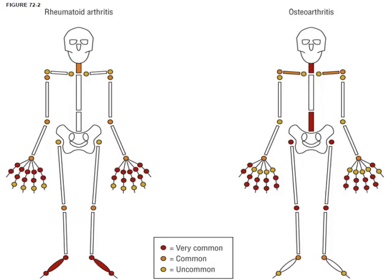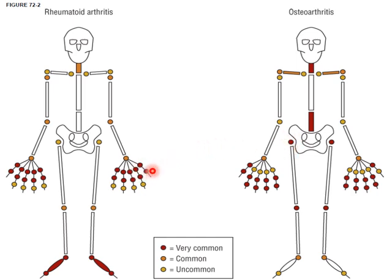A comparison image shows RA on the left affecting small joints, while osteoarthritis affects larger joints like knees, hips, back, and neck — more related to chronic wear and tear. RA is more of an autoimmune condition.